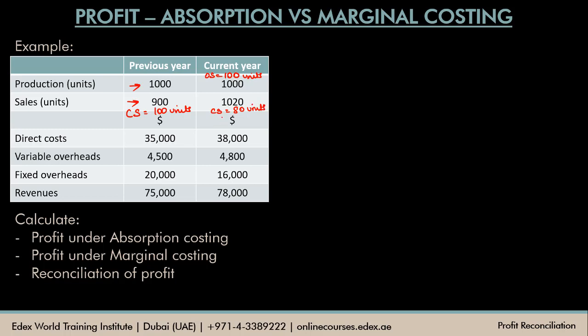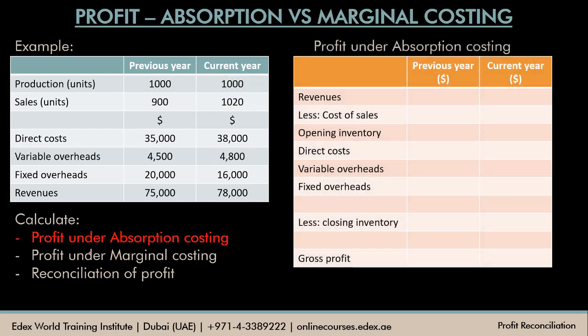We've analyzed the inventory details at opening and closing. Now for profit under absorption costing: revenues for the previous year are 75,000. Opening inventory is 0. Direct cost incurred 35,000, variable overheads 45,500 — I'm getting these values from the data. Fixed overheads incurred 20,000. The total cost incurred during the period is 59,500. We need to value closing inventory to deduct from 59,500 and get the cost of sales.